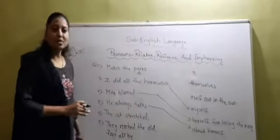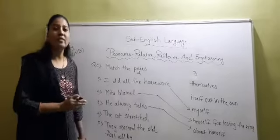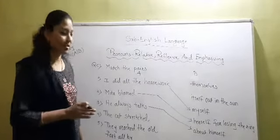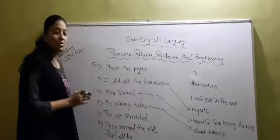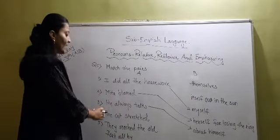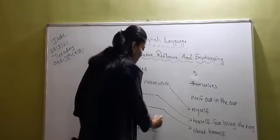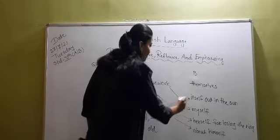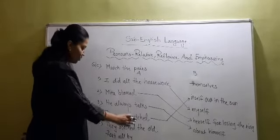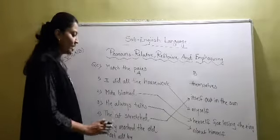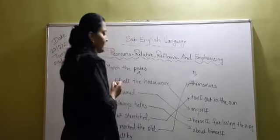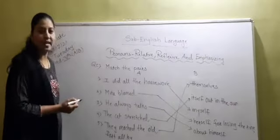The cat stretched. Remember, for animals or things we use 'it', and the reflexive pronoun for things is 'itself'. The cat stretched itself — so we match this with 'itself'. Last one: they reach the old food all by — and for 'they' we use 'themselves'. So these are the pairs that we have matched correctly.